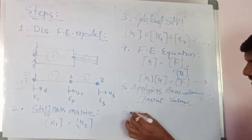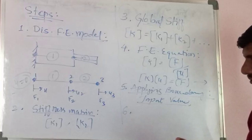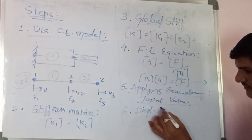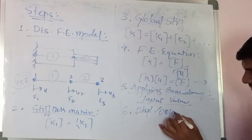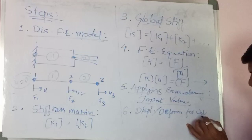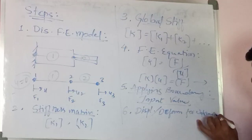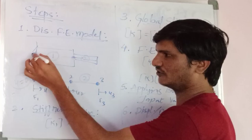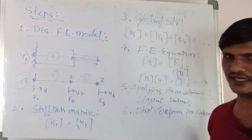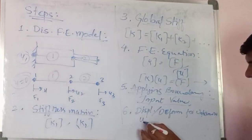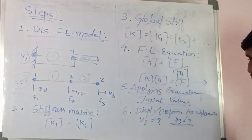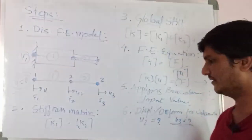After applying the boundary condition, you need to calculate the displacements or deformation for the unknown values. In this particular case, U1 = 0, so U2 and U3 are the unknown displacements you have to calculate.